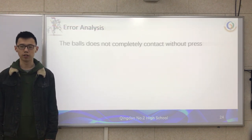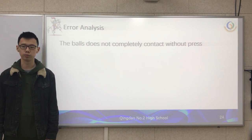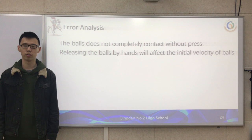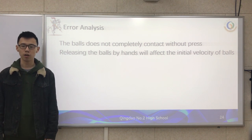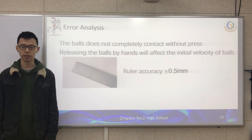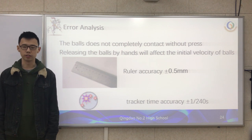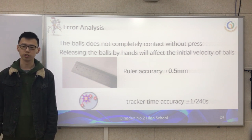We also have other sources of error. First, the balls are not in complete contact without pressure. Second, releasing the balls by hand affects the initial velocity. Third, the ruler accuracy is 0.5 mm, and the time accuracy is 1/240 seconds.